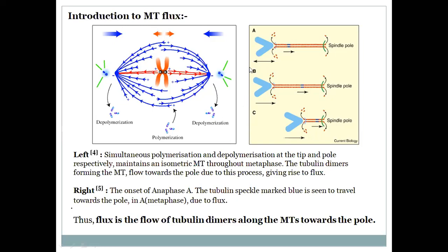This is what I meant by microtubule flux in my abstract, and it plays a very important role. Consider: depolymerization occurs at the poles and polymerization at the plus ends. If two microtubules are sliding, that sliding would be converted into flux if depolymerization is occurring at the poles. But if depolymerization were absent, the sliding could push the spindle pole further apart. Therefore, depolymerization and sliding are antagonistic to each other — this idea is central to the problem I'm about to introduce.